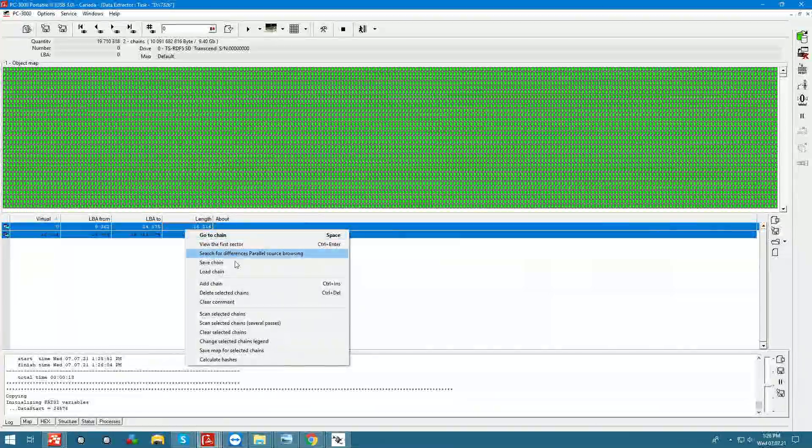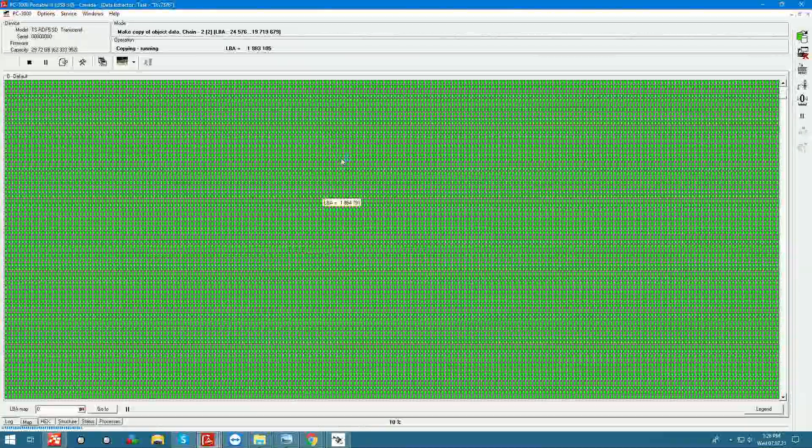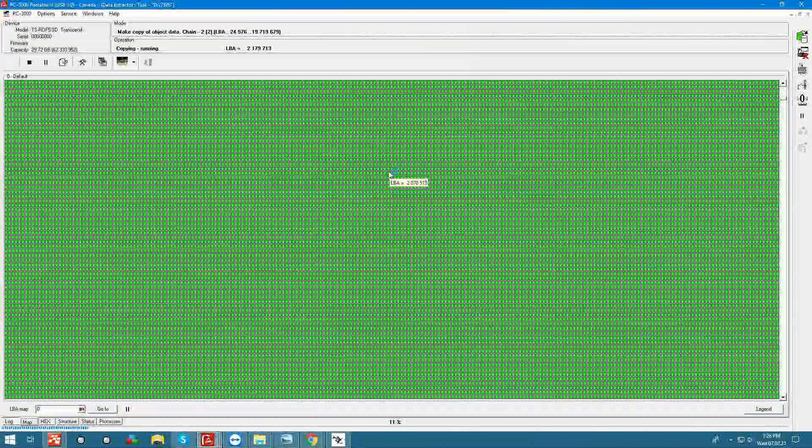So instead of imaging 32 gigs, we're going to only image 9.4 because that's all there was on this card. And when the image is completed, we'll have all of the data recovered.